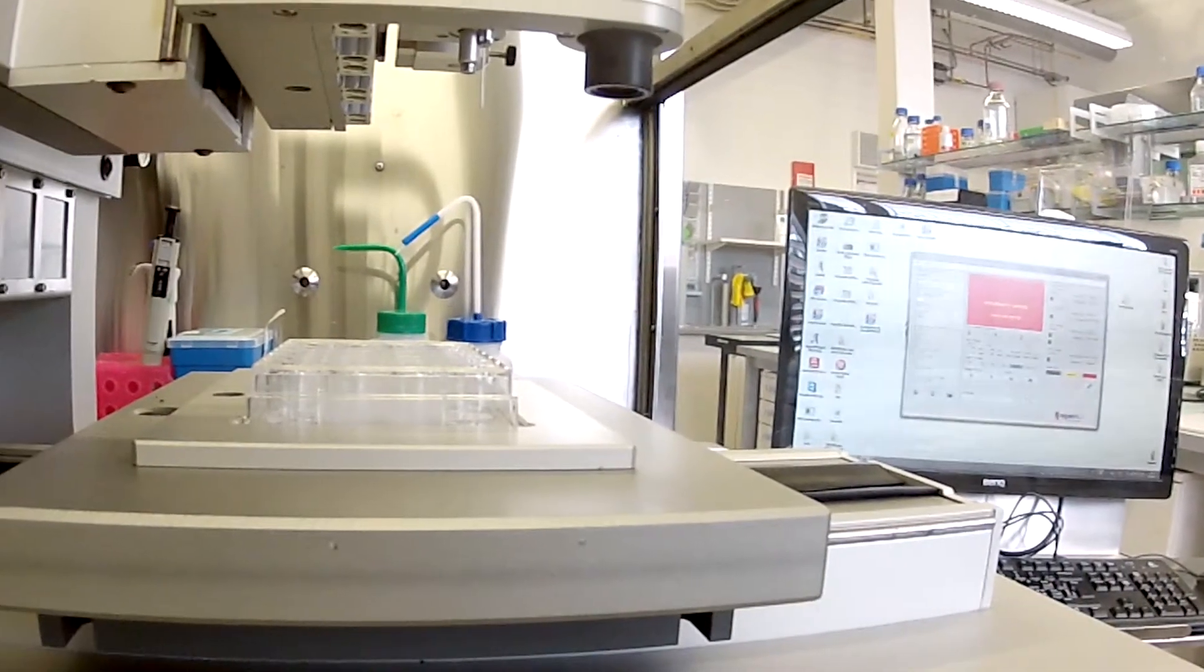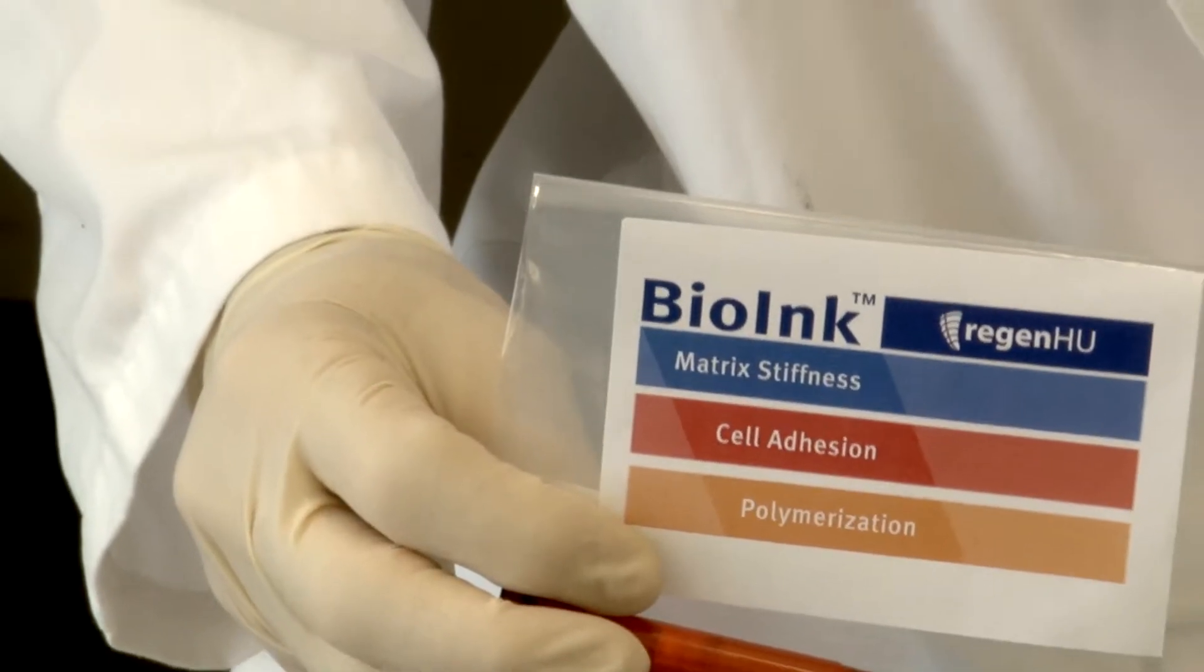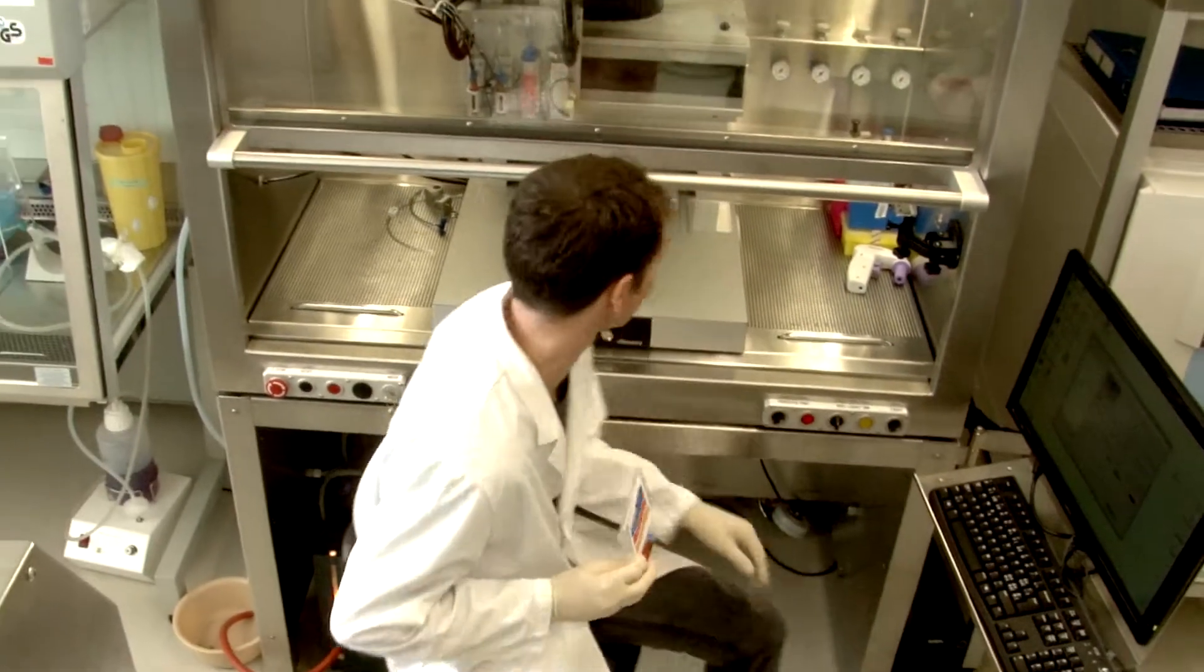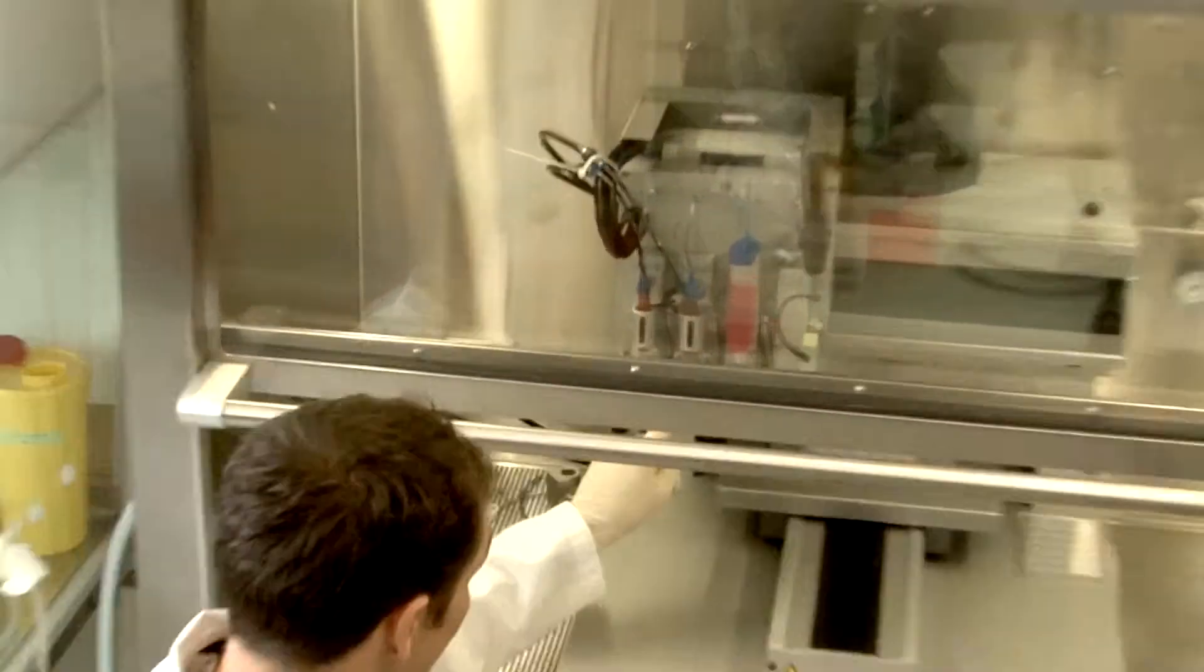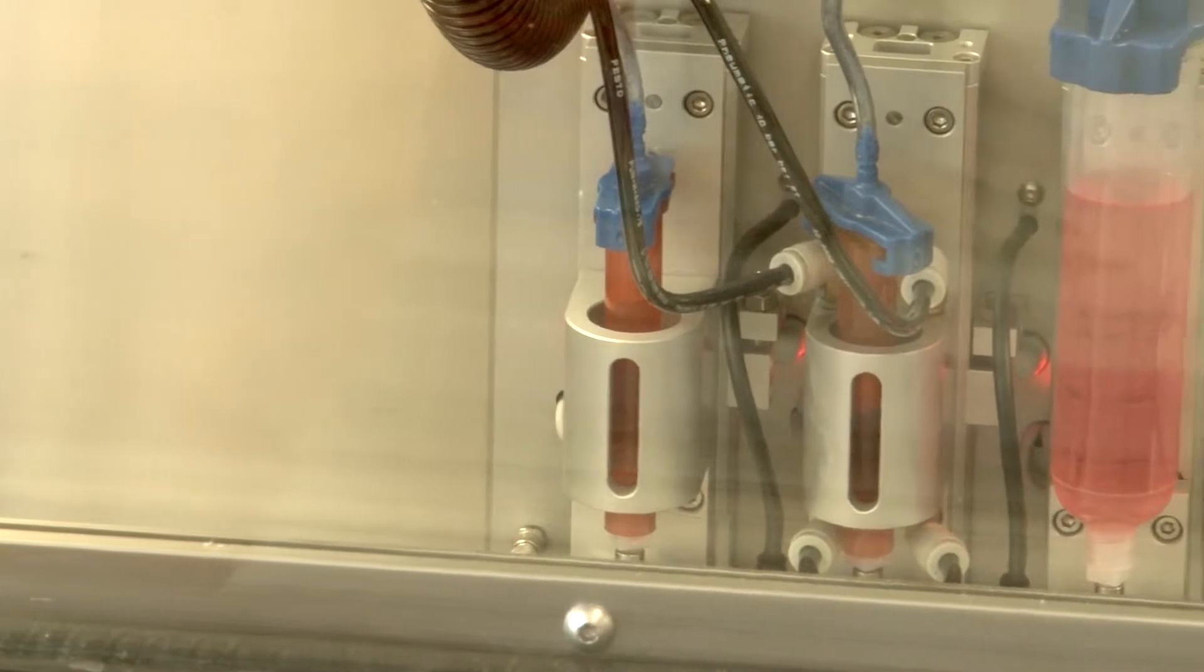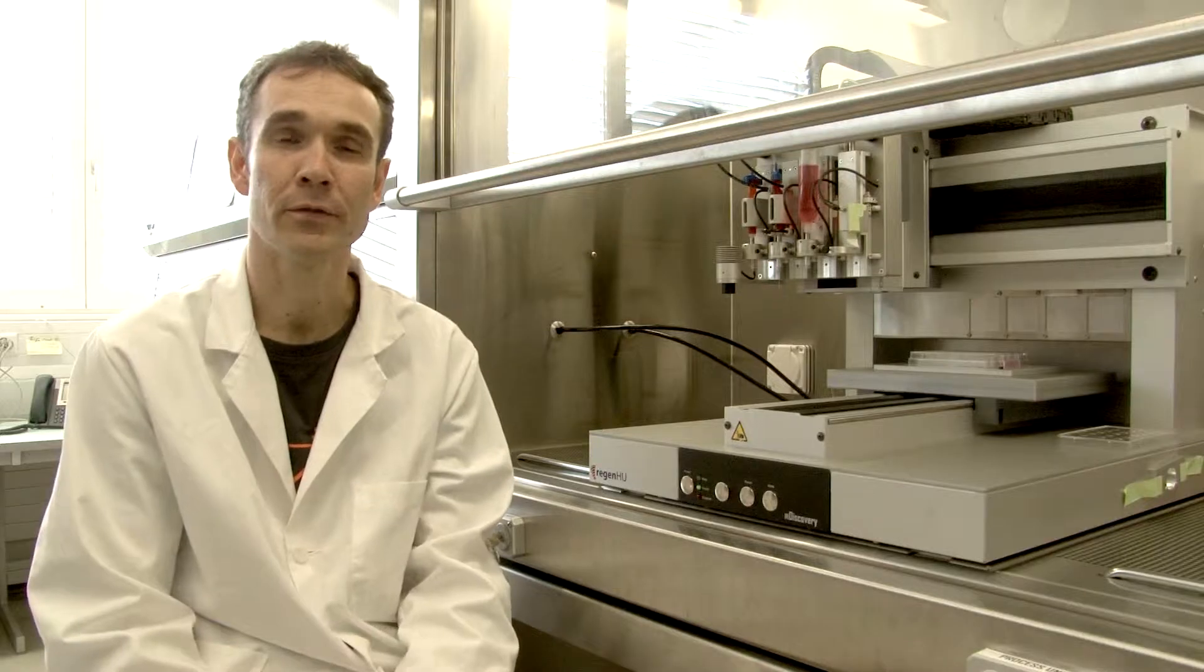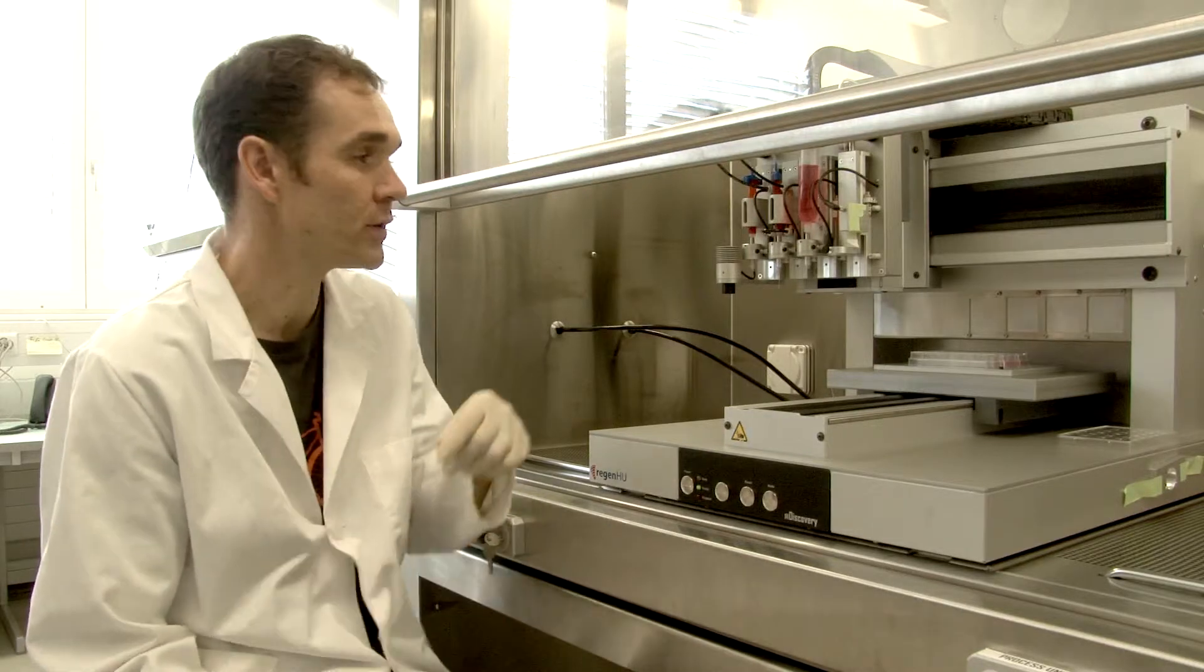We developed an extracellular matrix-like hydrogel called bioink in which the cells can proliferate and migrate. The bioink is solidified with the photopolymerization unit using visible light.